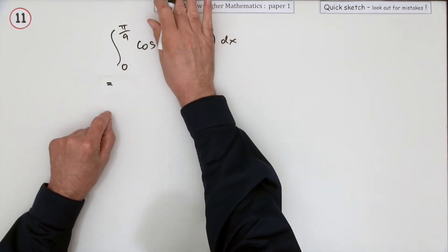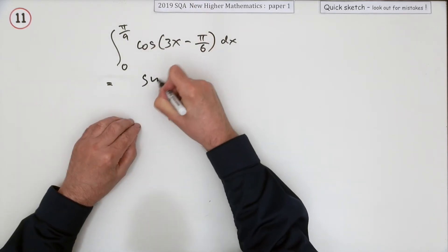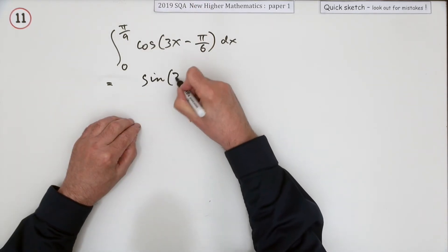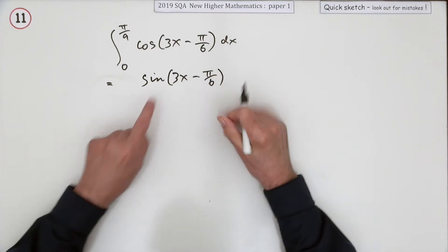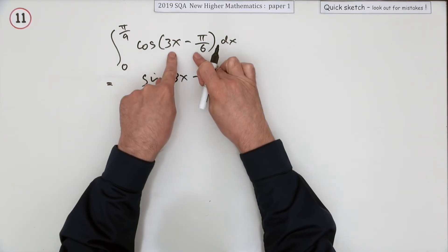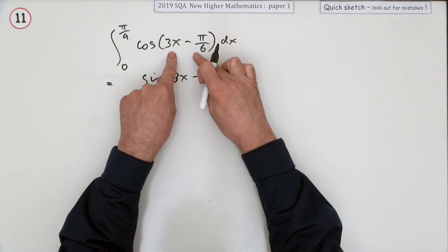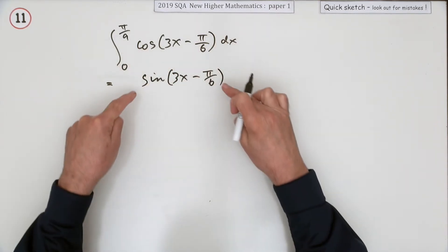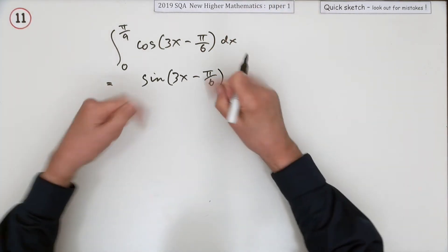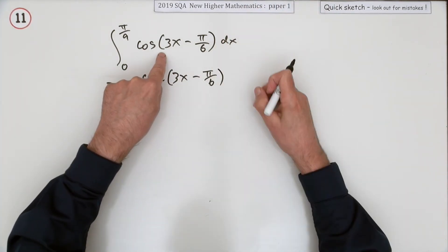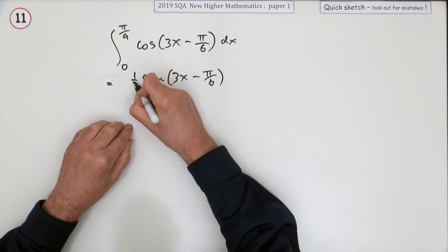First of all, it's cos, and no matter what it was, cos goes back to sine. So integrating gives you sine of (3x − π/6). It was a function of a linear function, which is the only type you need to know at Higher. You have to do the opposite of differentiating, which is to divide by the inner derivative. The inner derivative is 3, so it'll be one third of that.